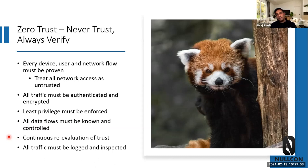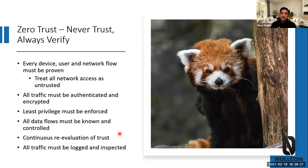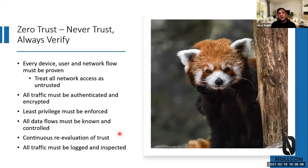Zero Trust requires continuously re-evaluating established trust. As an example: if a user was accessing data from an IP address in India and within 30 minutes that access shows a source IP from a very different country, it is not feasible for that user to have moved in that timeframe. So the new traffic is no longer trusted — it must be blocked or require stepped-up authentication. This continuous re-evaluation is a must. All traffic must also be logged and inspected — that is critical.